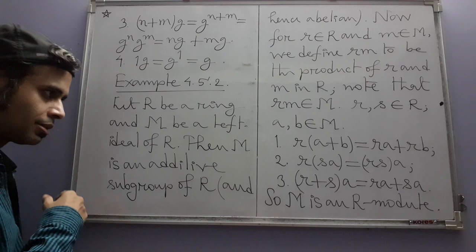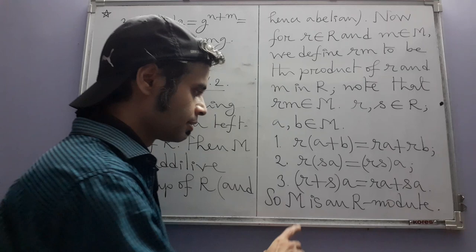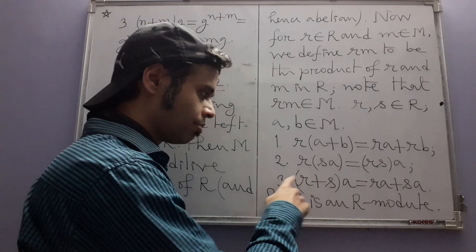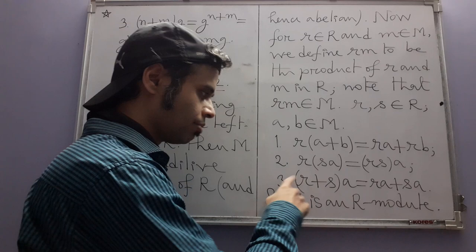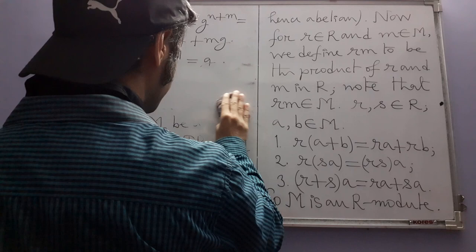This construction is somewhat like quotient constructions — similar to how we constructed quotient groups from groups and normal subgroups, quotient rings from rings and ideals, and quotient spaces from vector spaces and subspaces. Here however we have a ring and a left ideal, not necessarily a full ideal, and the resulting structure is a module.